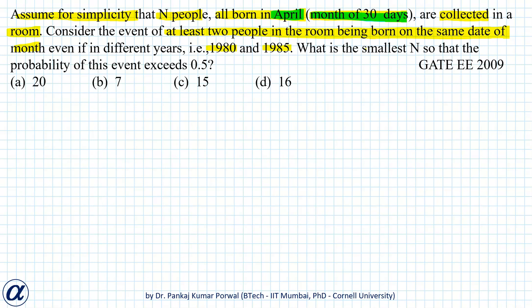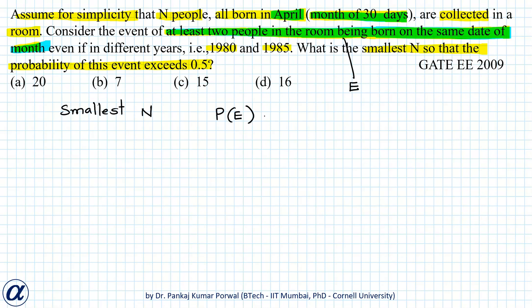We want to find the smallest n so that the probability of this event exceeds 0.5, where the event E is that at least two people in the room are born on the same date of the month. So let's call this event E and we want to find the smallest n such that probability of E exceeds 0.5. This event E is quite a complex event and very difficult to consider all the cases.